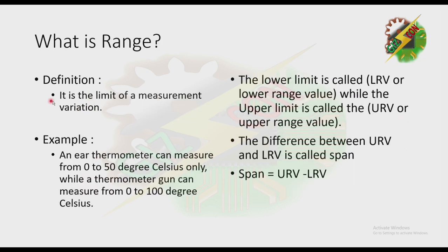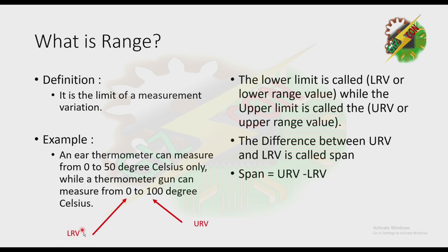What is range? By definition, it is the limit of measurement variation. For example, an air thermometer can measure from 0 to 50 degrees Celsius only, while another thermometer can measure from 0 to 100 degrees Celsius. The lower limit is called LRV or lower range value, while the upper limit is called URV or upper range value. 0 here is the LRV and 100 here is the URV. The difference between URV and LRV is called SPAN — SPAN is equivalent to URV minus LRV.